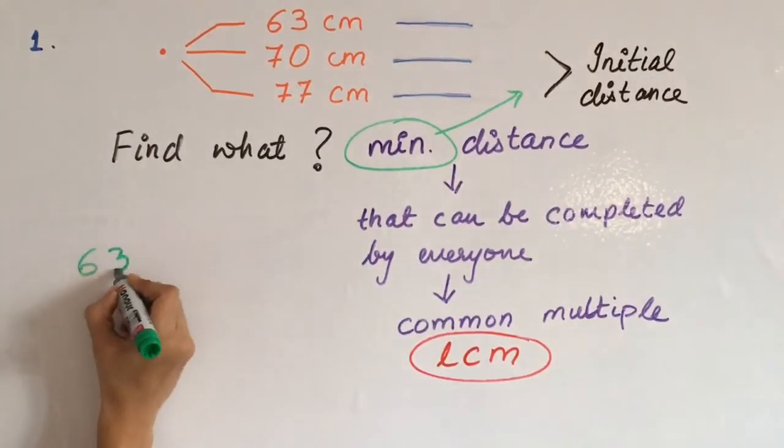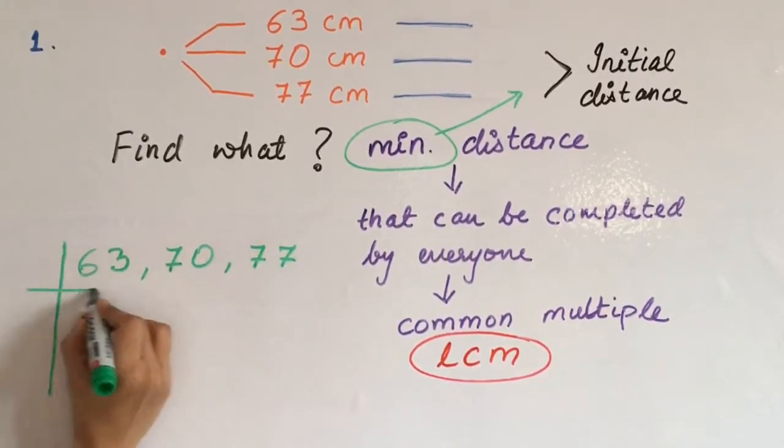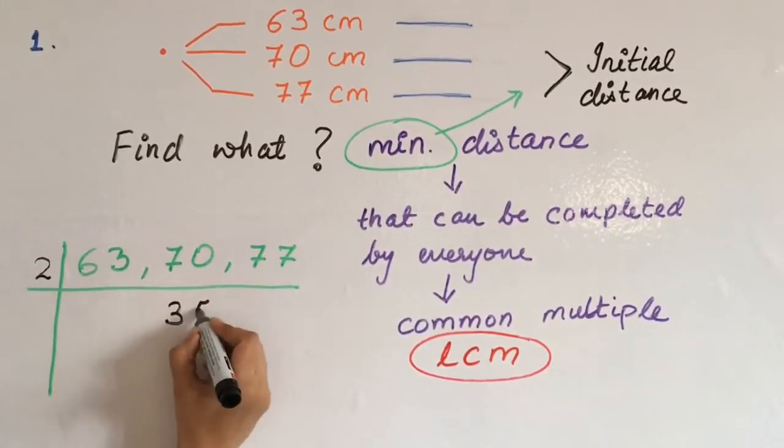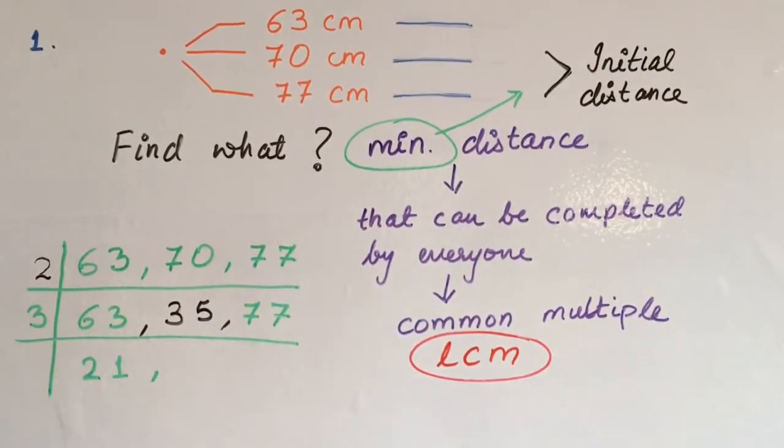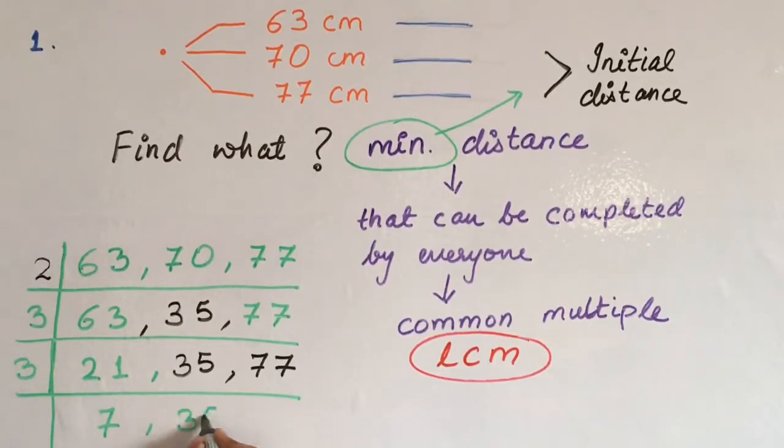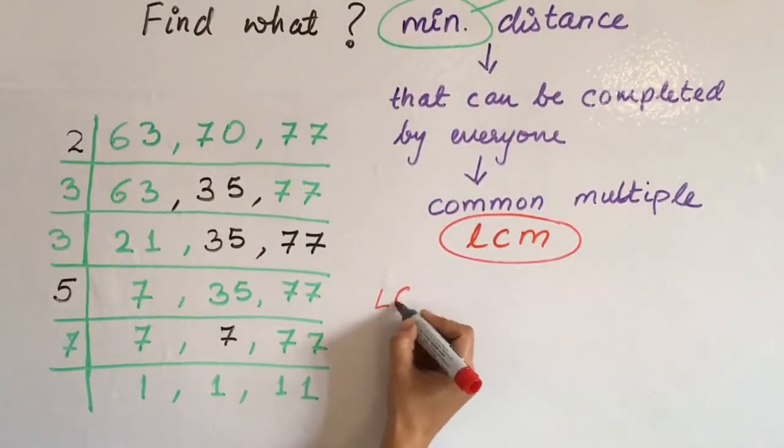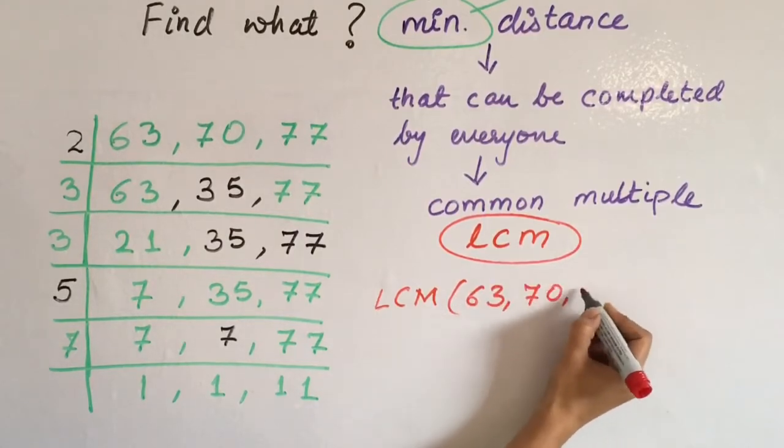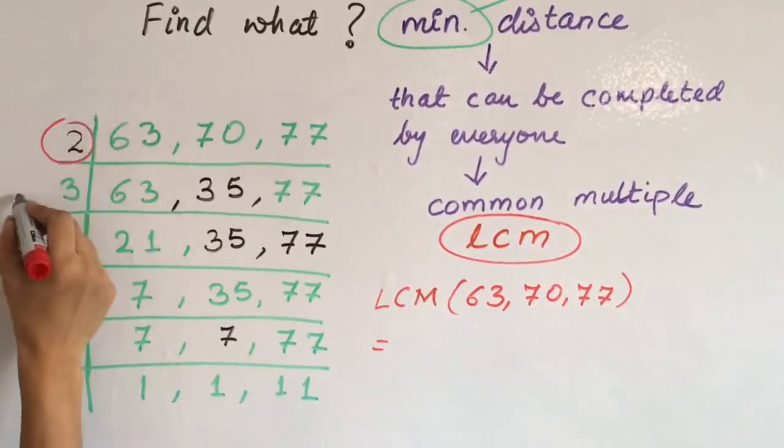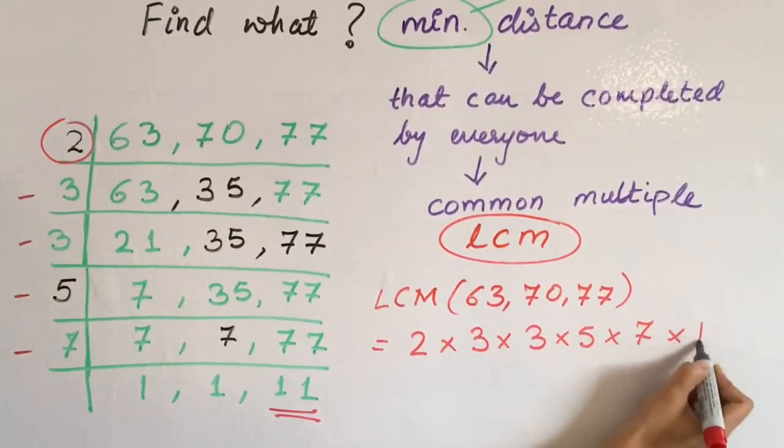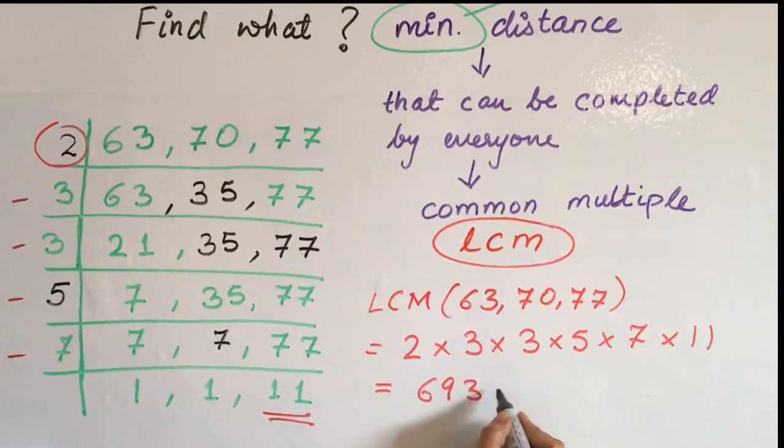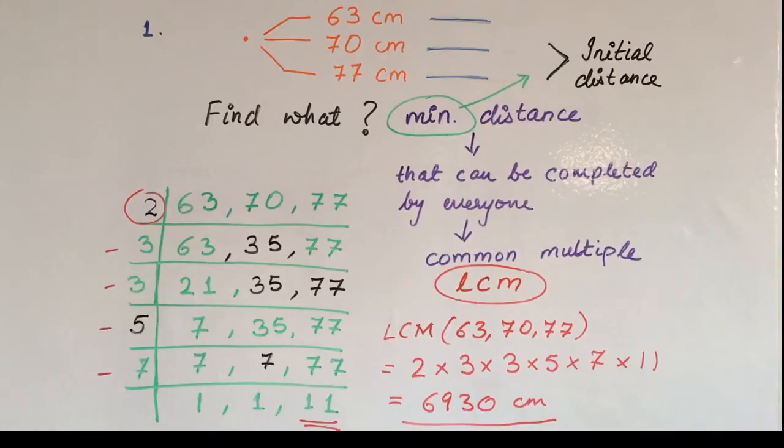So let us now take LCM of 63, 70 and 77. First, we will start with the number 2. 70 divides, rest of the numbers write as it is. Then we will check from 3. 63 divides. 35 and 77 write as it is. Again we check with 3 because 21 is divided by 3. Then number 5 and then number 7. The LCM will be the product of 2, 3, 3, 5, 7 and 11. On multiplication, what we get is the number 6930, which is going to be the minimum distance that will be completed by everyone.